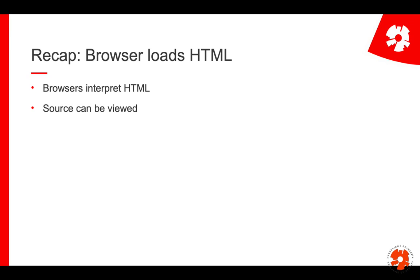As a second part of this module we look at the DOM, the document object model. As a short recap, what happens whenever you get a response with an HTML body from the server, the browser loads this HTML. This basically means that the browser goes through the code and interprets it and displays the result to the user, but you can always view the source.